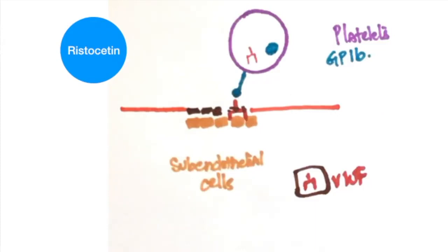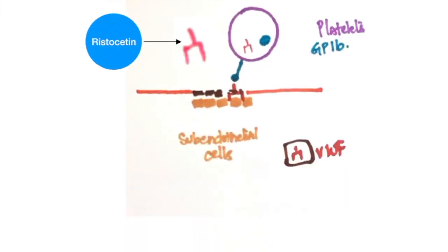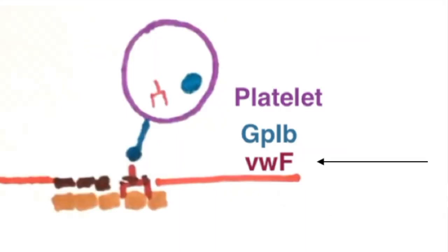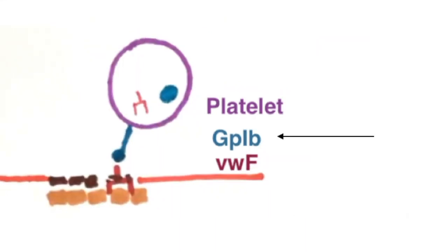Ristocetin activates von Willebrand factor to bind to GP1B. In case there is no aggregation with Ristocetin, it would mean that either von Willebrand factor is defective or GP1B is defective.